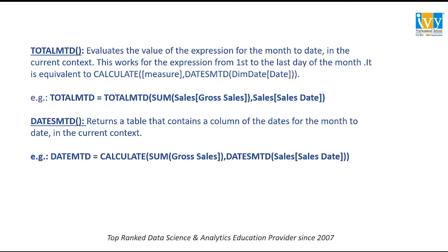DATESMTD returns a table that contains a column of dates for the month-to-date in the current context. The formula uses the CALCULATE function: CALCULATE(SUM(Sales), DATESMTD(SalesDate[Date])). In this case, the DATESMTD function works more like a filter on the CALCULATE function. Let's use these two formulas and see the difference with a practical example.